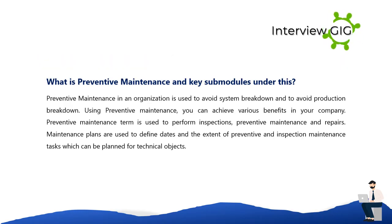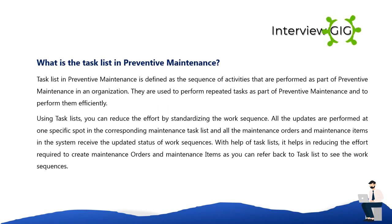Preventive maintenance in an organization is used to avoid system breakdown and production breakdown. Using preventive maintenance you can achieve various benefits. The term covers inspections, preventive maintenance tasks, and repairs. Maintenance plans are used to define the dates and extent of preventive and inspection maintenance tasks that can be planned for technical objects.